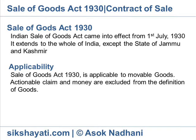Applicability. The Sale of Goods Act, 1930, is applicable to movable goods. Actionable claim and money are excluded from the definition of goods. The unrepealed provisions of the Indian Contract Act, 1872, except as they are inconsistent with the express provisions of the Sale of Goods Act, 1930, shall continue to apply to contracts for sale of goods.